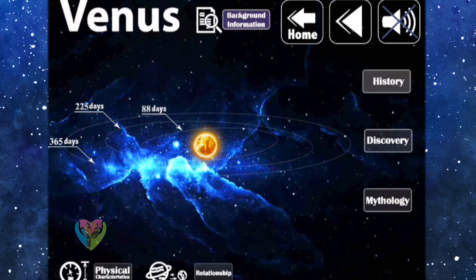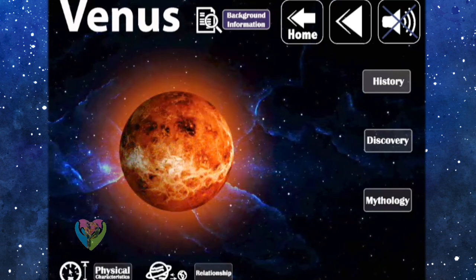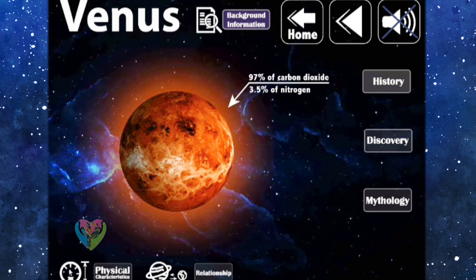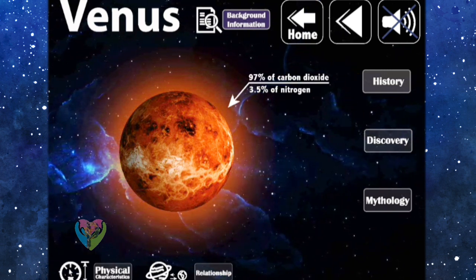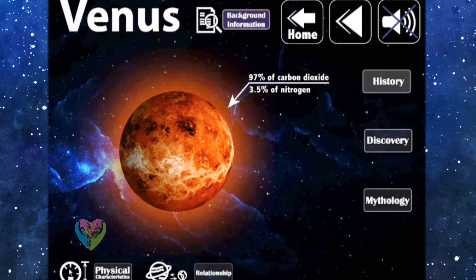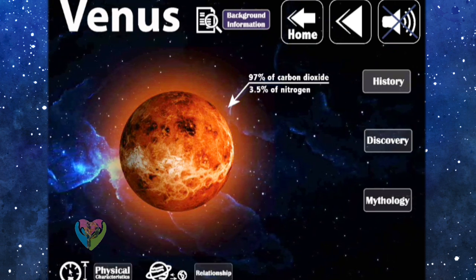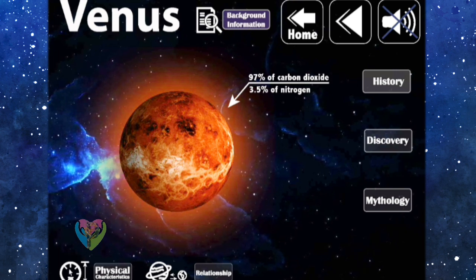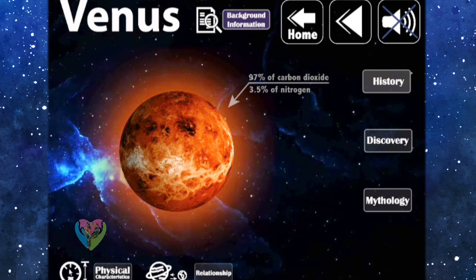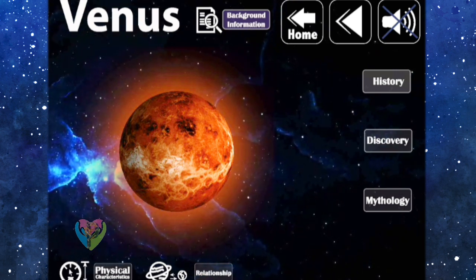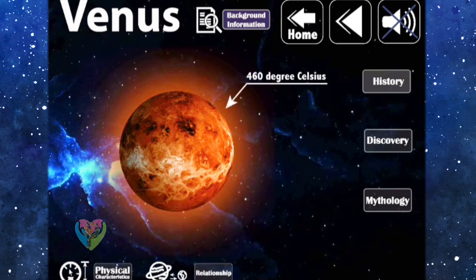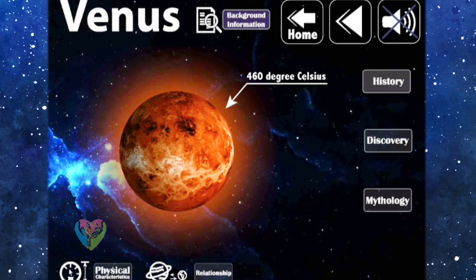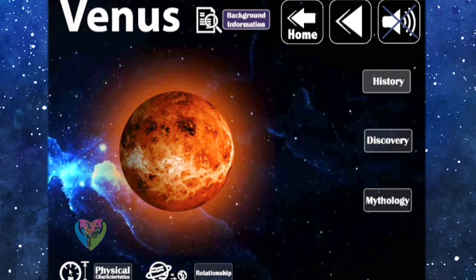Filled with 97% of carbon dioxide, 3.5% of nitrogen, and 0.5% of sulfur dioxide and argon. The high carbon dioxide causes the serious greenhouse effect. Therefore, Venus is the hottest planet in the solar system, which is up to 460 degrees Celsius, and causes everything to flare.